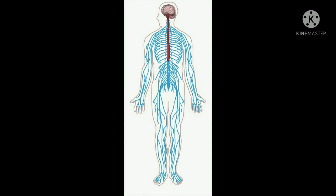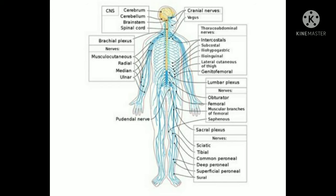Hello, good morning. Peripheral nervous system. The peripheral nervous system is formed by the nerves arising from the brain and the spinal cord.